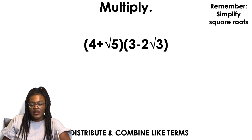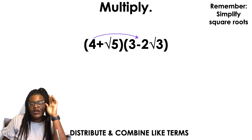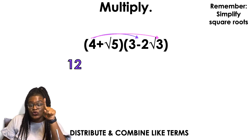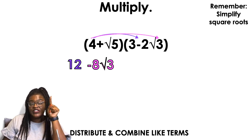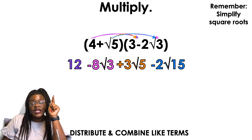Is this the last one? This is the last radical one, but we still have imaginary numbers in a second, in a second. Okay, 4 times 3, 12. 4 times negative 2 square root of 3. That's going to be negative 8 square root of 3. Square root of 5 times 3 is 3 square root of 5 positive. So put a plus there. And then square root of 5 times negative 2 square root of 3 is going to give me negative 2 square root of 15.